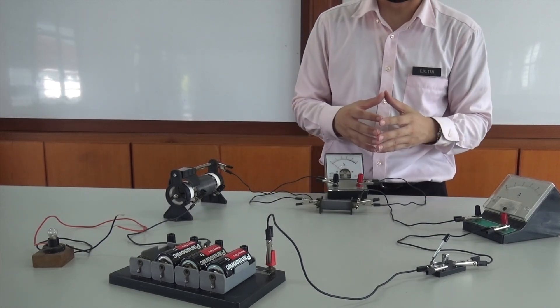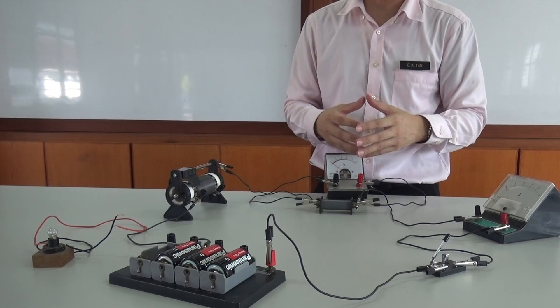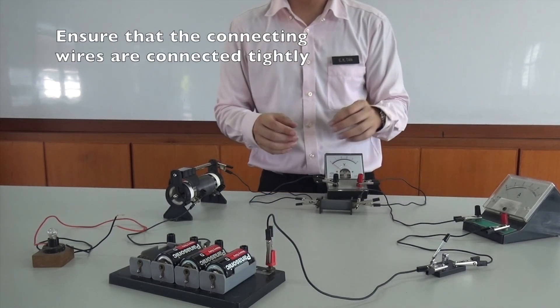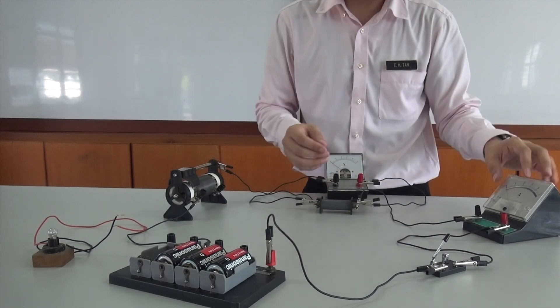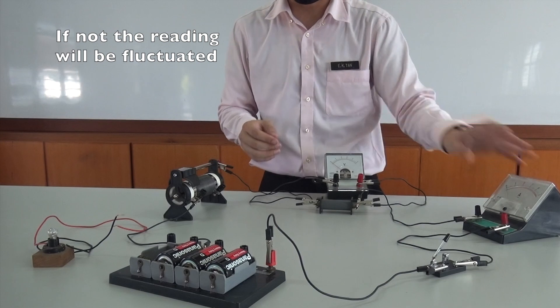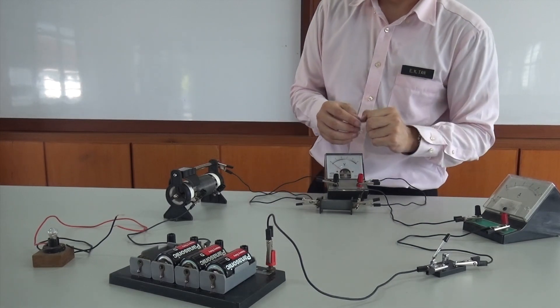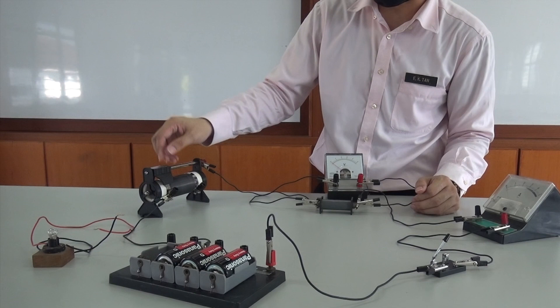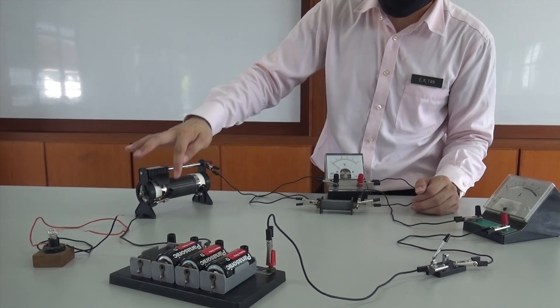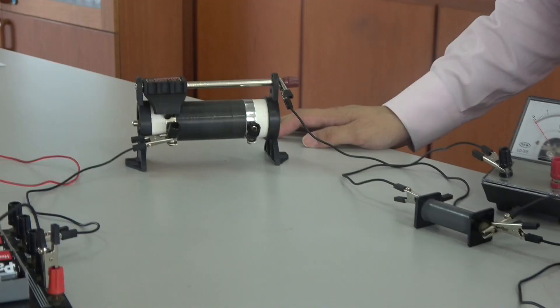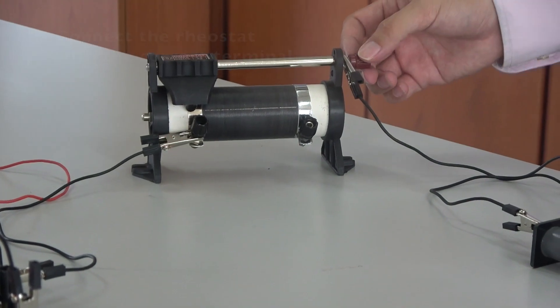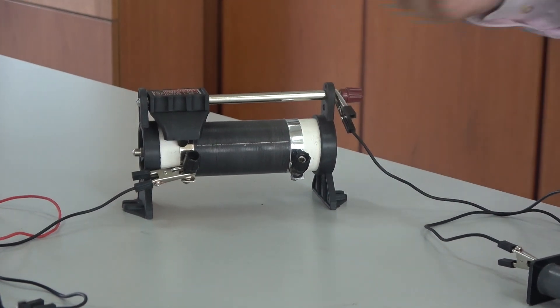There are a few things that we need to make sure before we can start. First thing, make sure all the connections are tight. If the connection is not tight, our reading may fluctuate, so it's harder for us to take the reading. The second thing that we always make a mistake is we don't know how to use the rheostat. In this rheostat, we have 3 terminals here, so make sure that you connect one terminal over here, another one is at the side here.